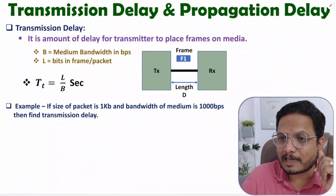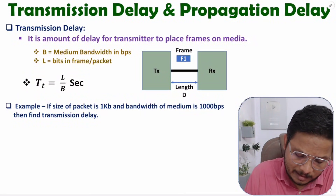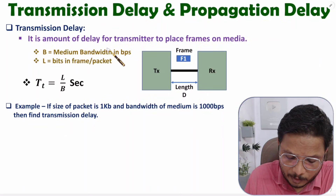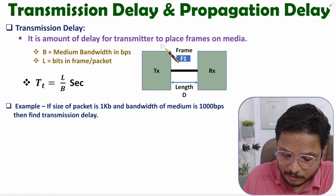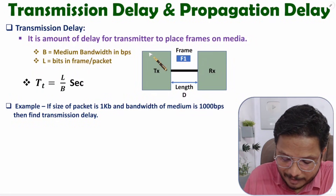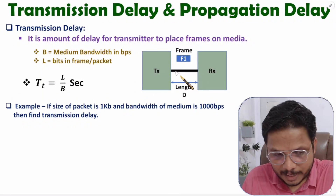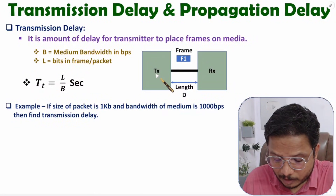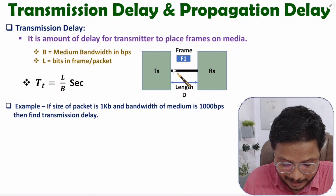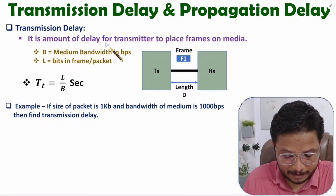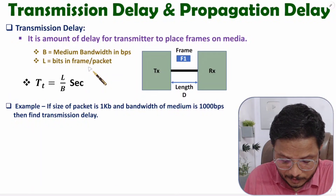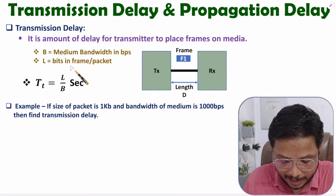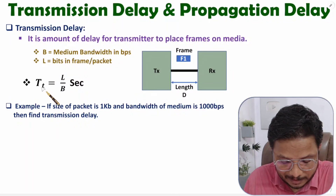Let us understand first: what is transmission delay? Transmission delay is the amount of delay for a transmitter to transmit frames on the media. Here we have a transmitter connected with a receiver via a medium. How much time that transmitter will take to place data on the media is defined by transmission delay. If size of the frame or packet is L and bandwidth of the medium is B, then by simply L divided by B we can calculate transmission delay.